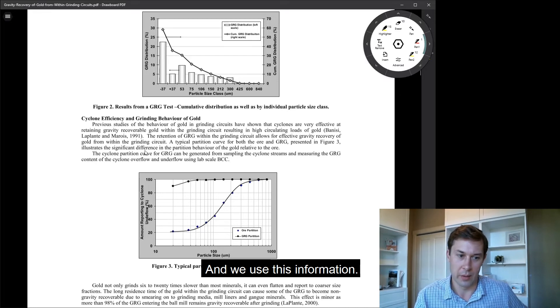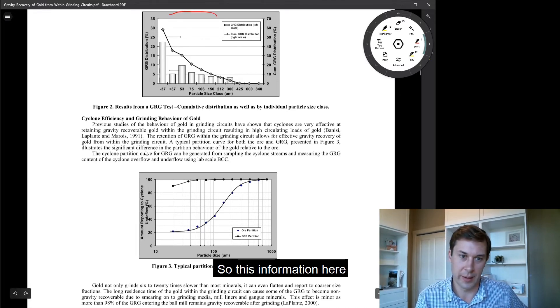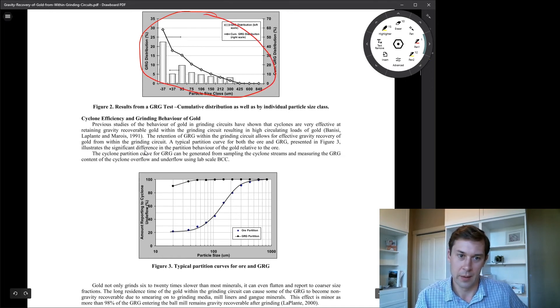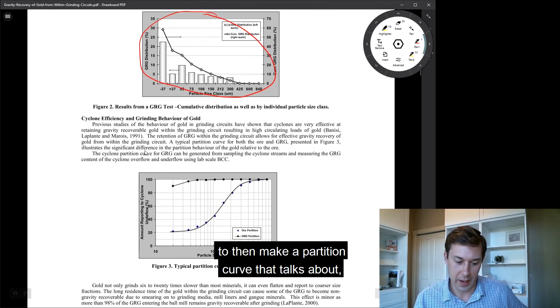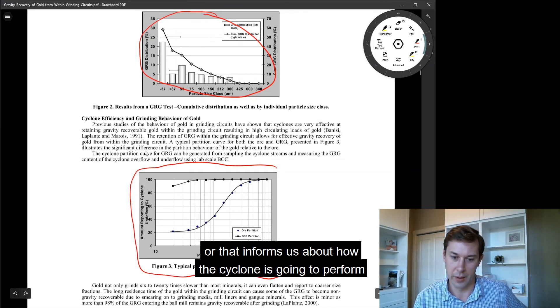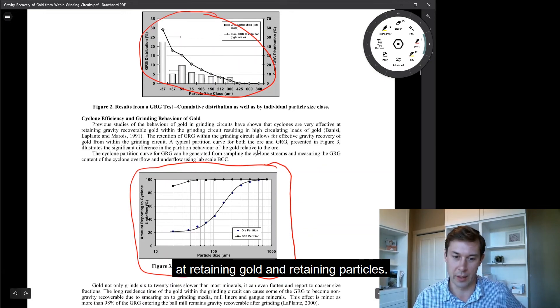And we use this information here to then make a partition curve that informs us about how the cyclone is going to perform at retaining gold and retaining particles.